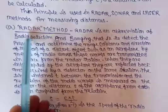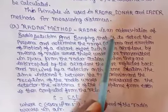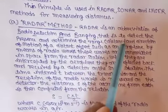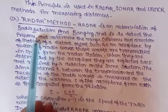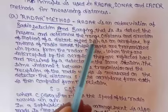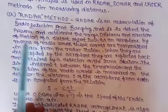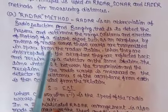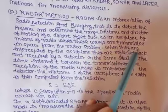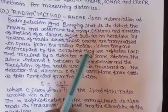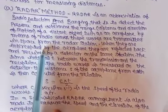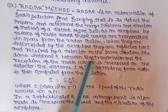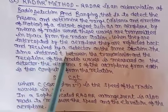Radar is an abbreviation of Radio Detection And Ranging — to detect the presence and determine the range (distance) and direction of motion of a distant object such as an airplane by means of radio waves. These waves are transmitted from the radar station and when intercepted by the airplane, they are reflected and received by a detector on the same station.